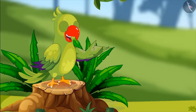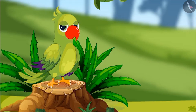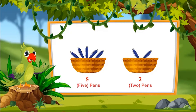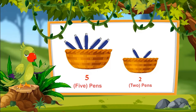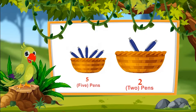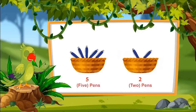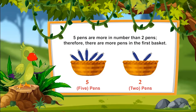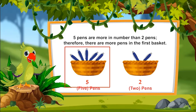Can you also compare the number of things near you like Pinky? Tell me, which basket has more pens — the first basket containing five pens or the second containing two pens? Absolutely correct! Five pens are more in number than two pens. Therefore, the first basket has more pens.